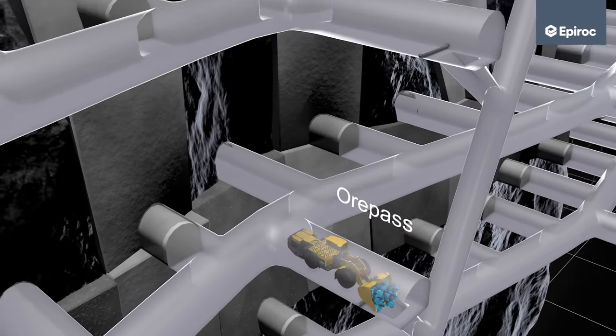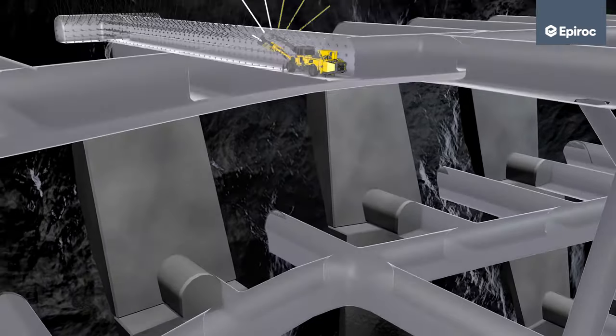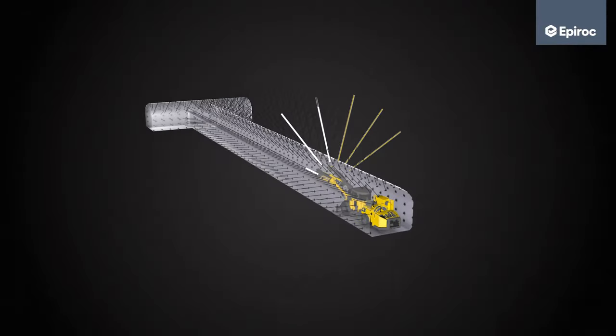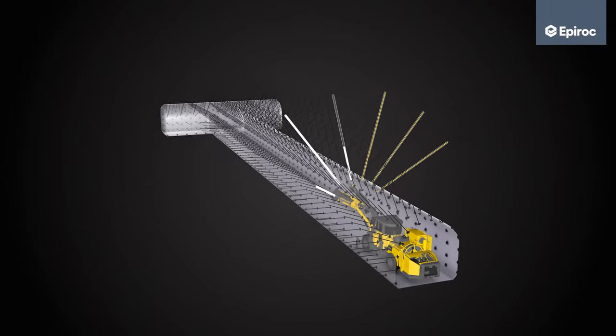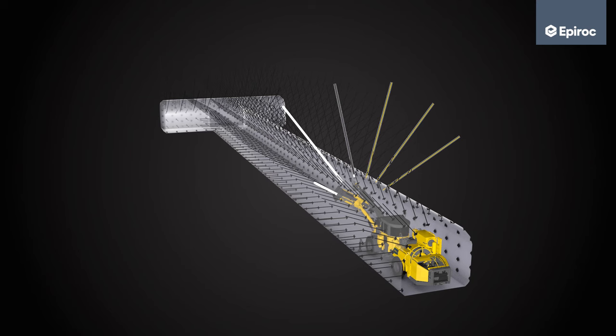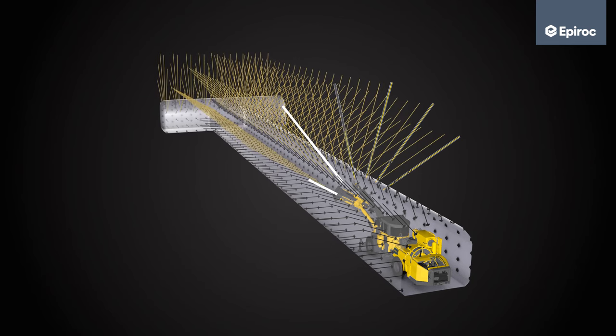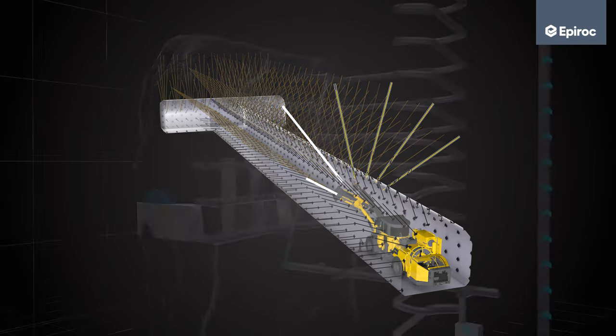Before it is time to excavate the secondary stopes, cable bolts are often installed above the stope. This will provide additional support to the rock mass, helping to prevent larger blocks from falling into the excavated stope.